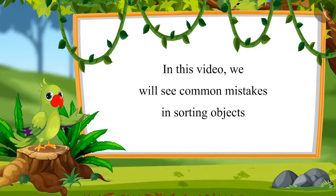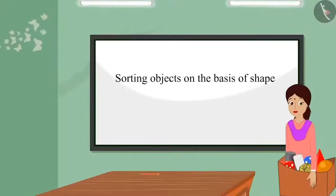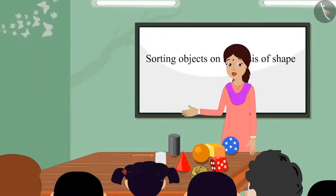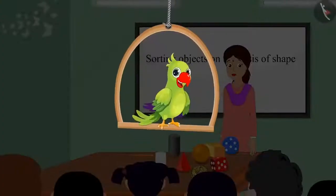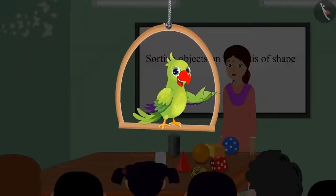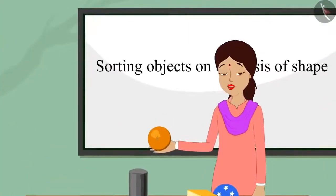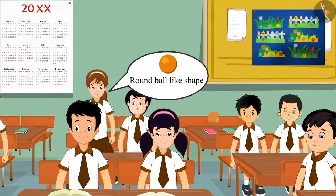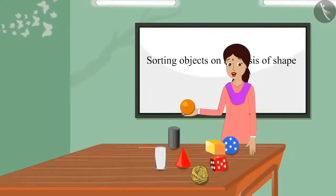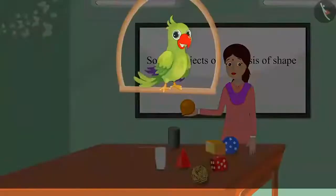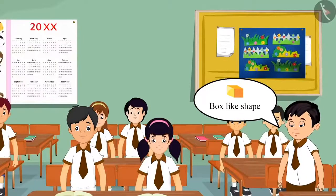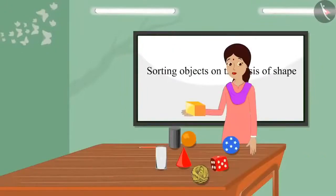In this video, we will see some common mistakes in sorting objects. Today, Chotu's teacher has brought some objects to the class. The teacher asked children to identify which shape each object resembles. Aarti said, 'This is a round ball-like shape.' The teacher praised her. Then the teacher showed another item and Chotu said, 'This has a box-like shape.' Then Aarti identified one as cylinder-like, and Chotu identified another as ice cream cone-like. The teacher confirmed both were correct.